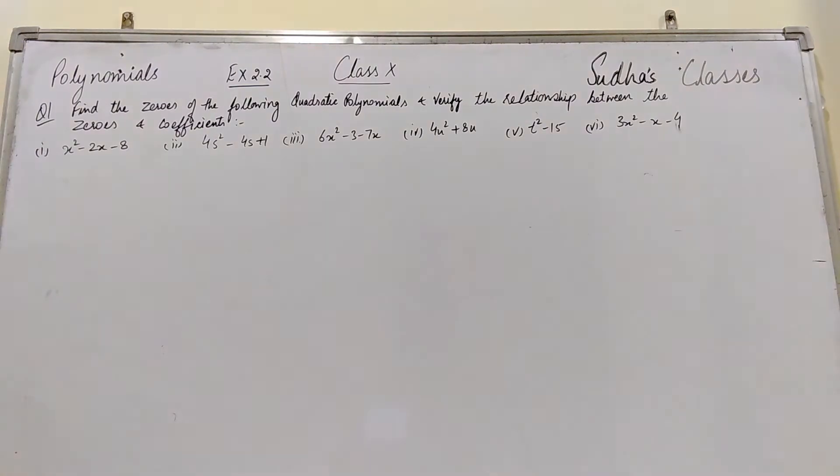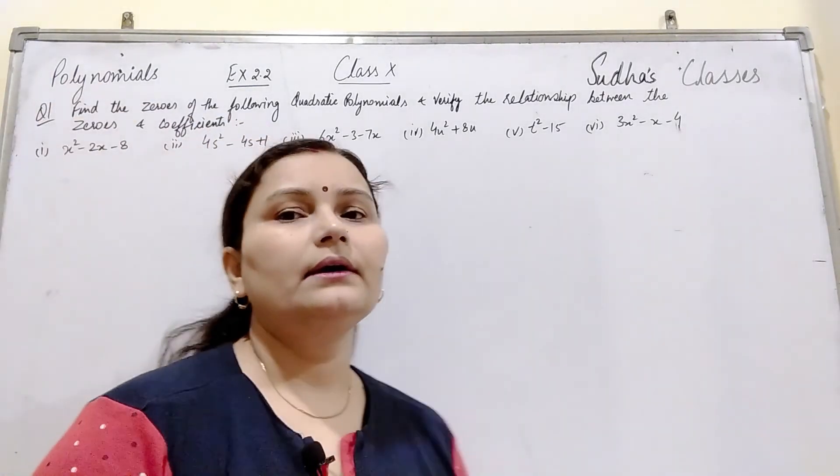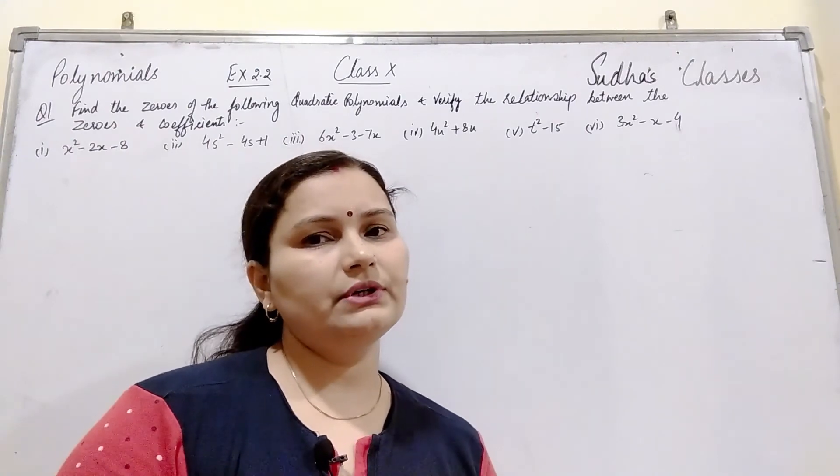Exercise 2.2, question 1: Find the zeros of the following quadratic polynomials and verify the relationship between the zeros and coefficients. Here we have 6 parts given, and in each part we will find zeros of quadratic polynomials and then verify the relationship between zeros and coefficients.